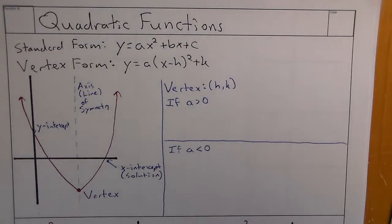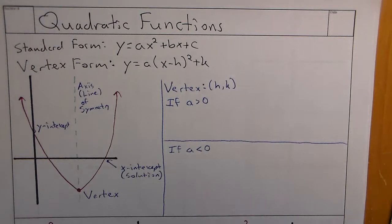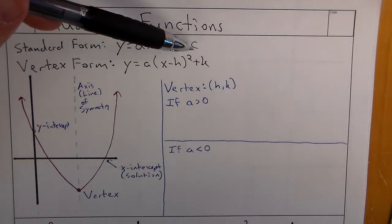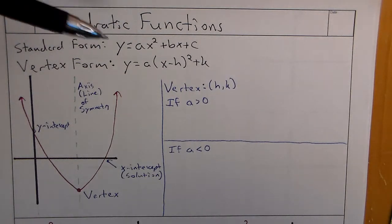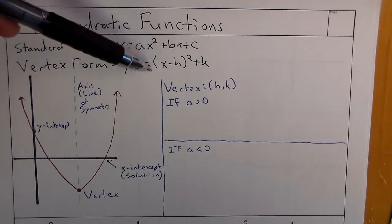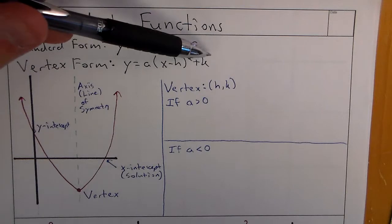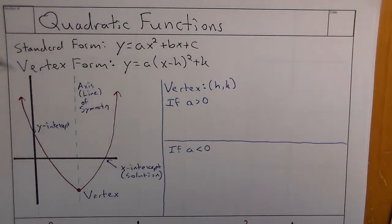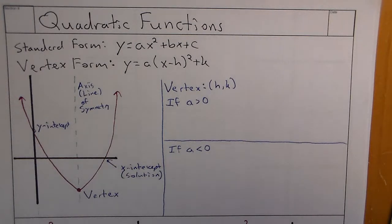We're looking at our introduction to quadratic functions. Anytime we see a quadratic function, we'll typically look at it in standard form, which is ax² + bx + c, or what we call vertex form, which is a times the quantity (x - h)² + k. They have different ways of getting the important information to graph them, but right now it's just an introduction to basic forms and changes that occur within quadratic functions.